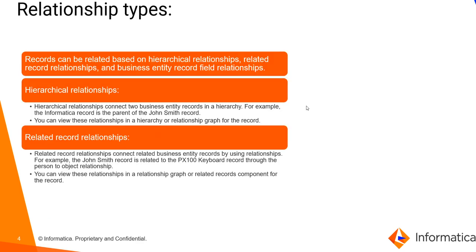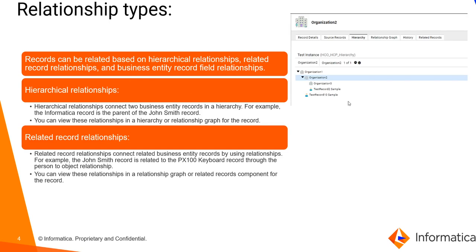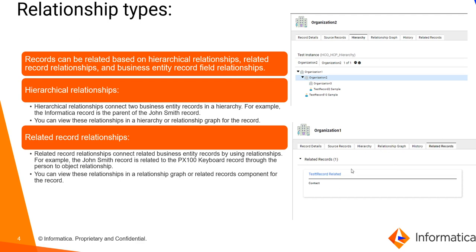Relationship types: Records can be related based on hierarchical relationships, related record relationships, and business entity record field relationships. Hierarchical relationships connect two business entity records in a hierarchy — you can view this relationship in a hierarchy or a relationship graph for the record. Related record relationships connect related business entity records by using relationships, and you can view these in the relationship graph or in the related records section.